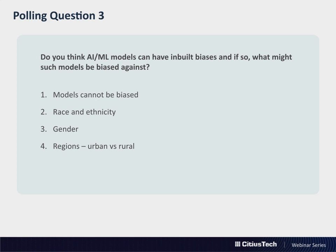The poll will appear on the right-hand side of your screen—just make sure you're out of full screen mode in order to see it. The question reads: do you think AI/ML models can have inbuilt biases? And if so, what might such models be biased against? Your answers are: models cannot be biased; race and ethnicity; gender; or regions—urban versus rural. Go ahead and choose one of those answers, and I will turn it back to Shatang and Jeff.